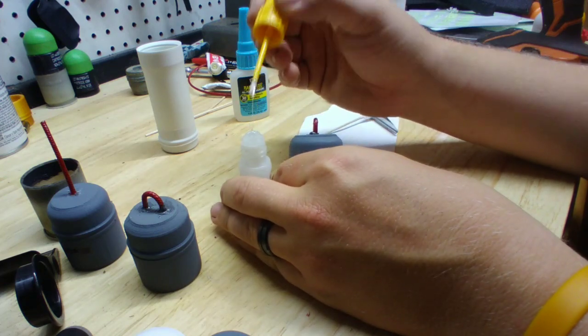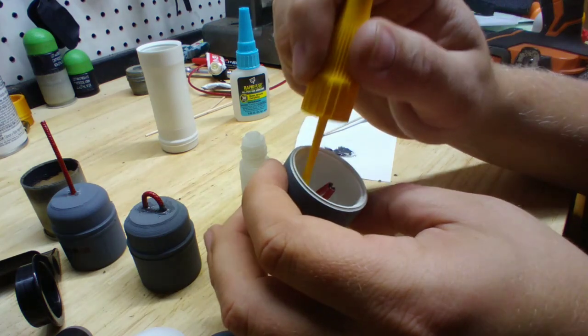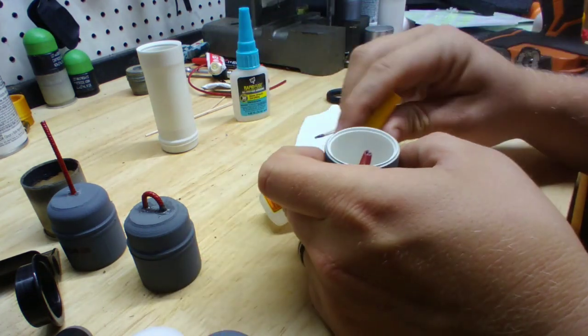And then I'm just going to take some of this gorilla super glue and on the inside, I'm just going to put it down in there around the base of the fuse just to give an extra seal.